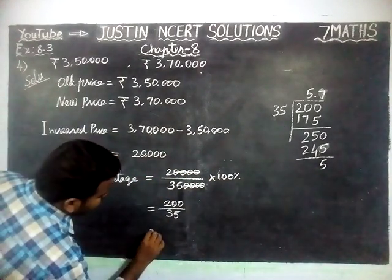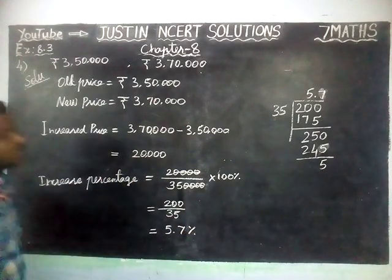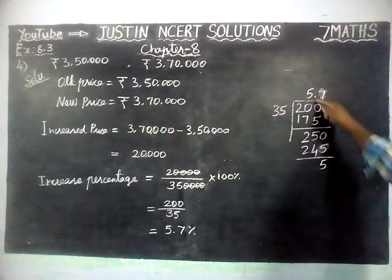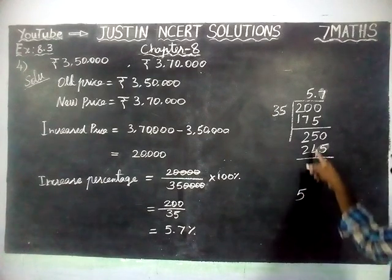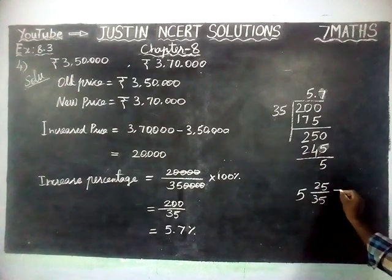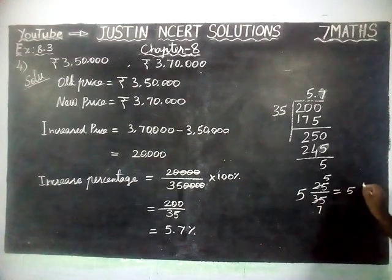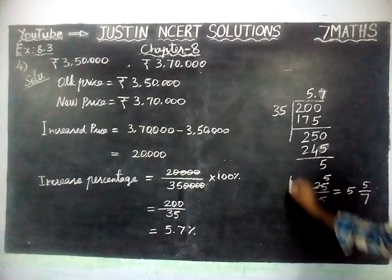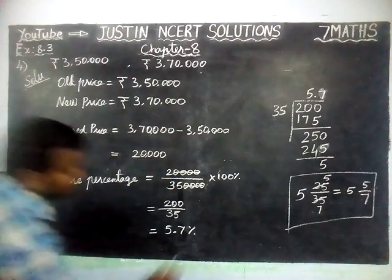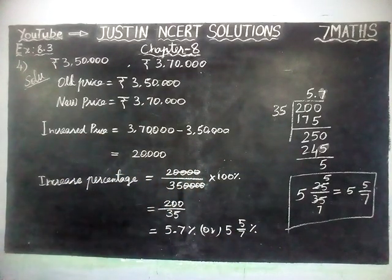This is an approximate value. So when we divide 200 by 35 we get 5.7%. We can also write it as a mixed fraction: the remainder 25 came, so 25 divided by 35 simplifies to 5/7. Therefore the answer is 5 5/7%, or approximately 5.7%.